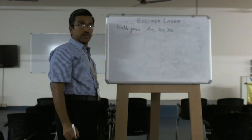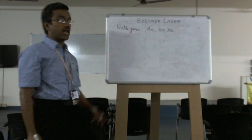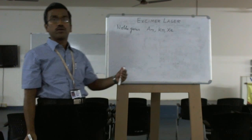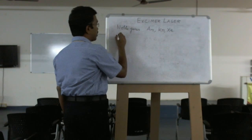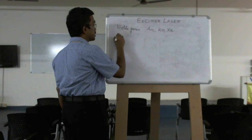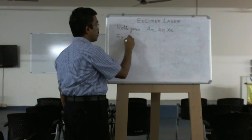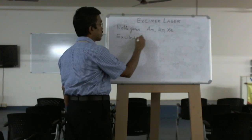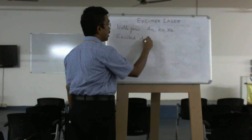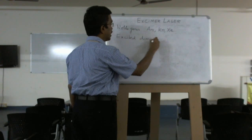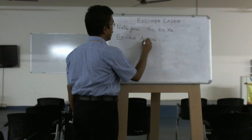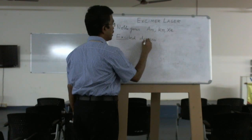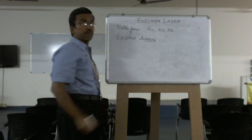The excited state, which has a minimum, we can call dimers. Simply, what is excimer means? It is nothing but excited dimers - that is, excited dimers we can call excimers.